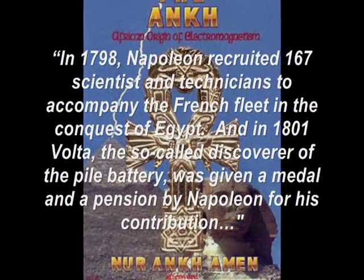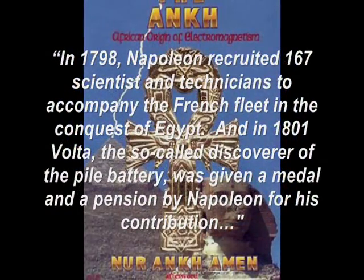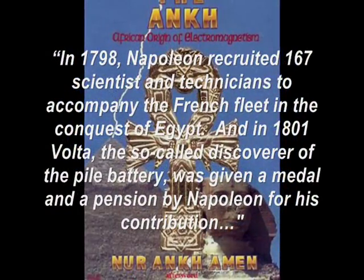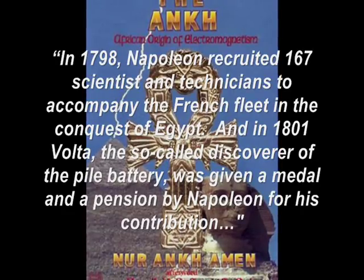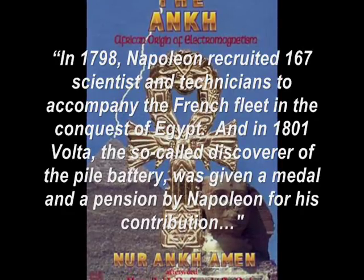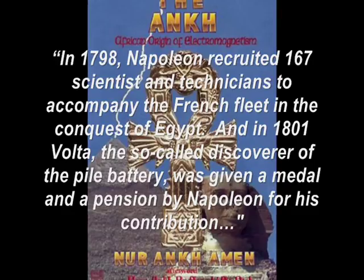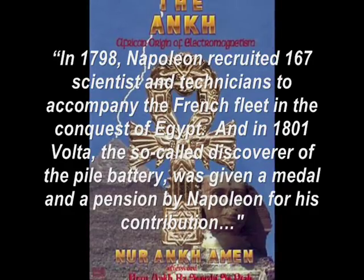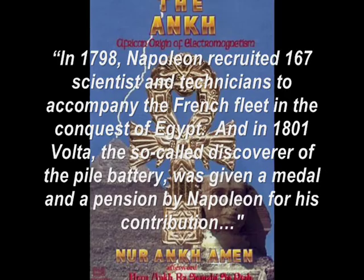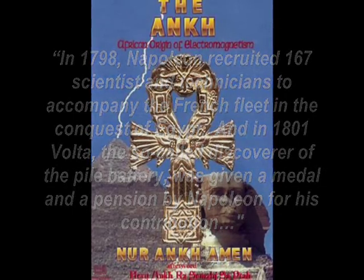He states that in 1798, Napoleon recruited 167 scientists and technicians to accompany the French fleet in the conquest of Egypt. And in 1801, Volta — the so-called discoverer of the power battery — was given a medal and a pension by Napoleon for his contribution.